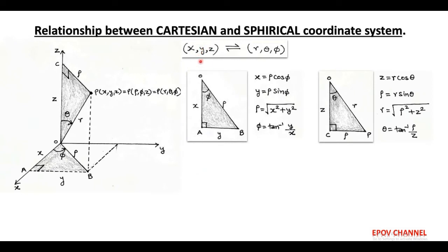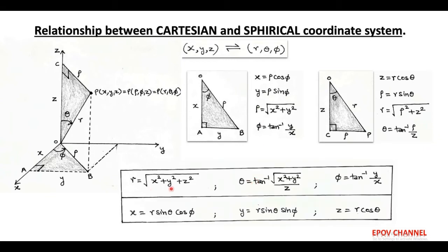Now, in order to get the relationship between x, y, z and r, theta, phi, we can put rho equals to under root of x squared plus y squared. So, the spherical coordinate system becomes: r equals to under root of x squared plus y squared plus z squared, theta equals to tan inverse of under root of x squared plus y squared upon z, and phi equals to tan inverse of y upon x. Similarly, for Cartesian coordinates, we put rho equals to r sin theta, which results in x equals to r sin theta cos phi, y equals to r sin theta sin phi, and z equals to r cos theta.